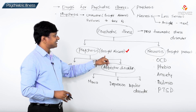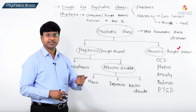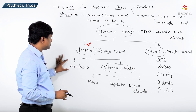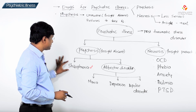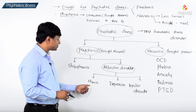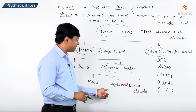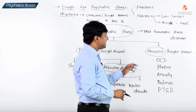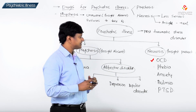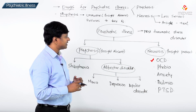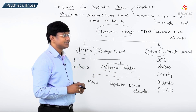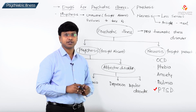To summarize, we classify psychiatric illness into psychosis and neurosis. Psychosis is where the insight is absent; neurosis is where the insight is present. Psychosis includes schizophrenia and affective disorders — mania, depression, and bipolar disorder. Neurosis includes obsessive compulsive disorder, phobia, anxiety, bulimia, and post-traumatic stress disorder.